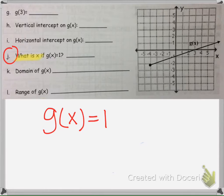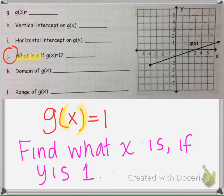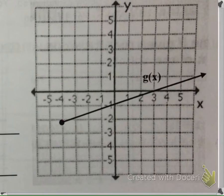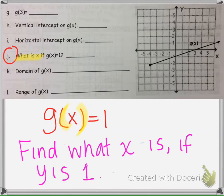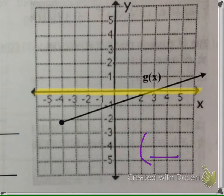This next question says: what is x if y is 1? So we need to figure out what input x is going to get us an output y of 1. We're trying to find x. Here's our x axis, and we want to know what x is going to have a y value of 1. If the output is 1, I'm going to go to the y axis right here and look where y is 1.